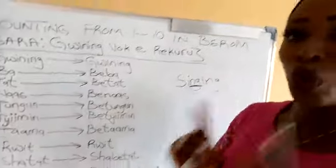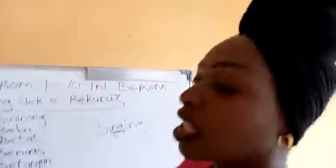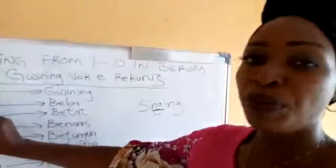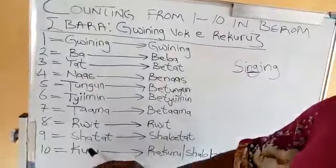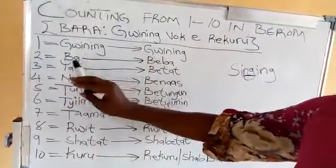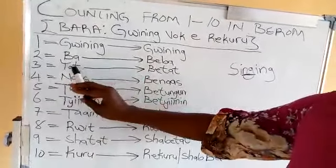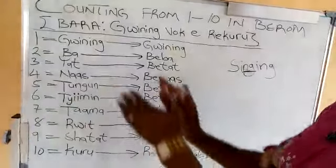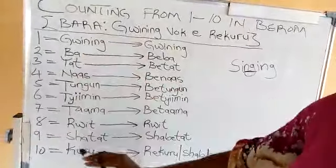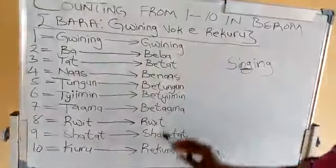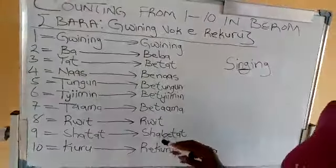Now, note what I'm about to say. If you are using this format, you maintain it from 1 to 10. You don't pick Biba from here and apply it elsewhere. No, and vice versa. So if you choose to use one format, you use that format throughout.